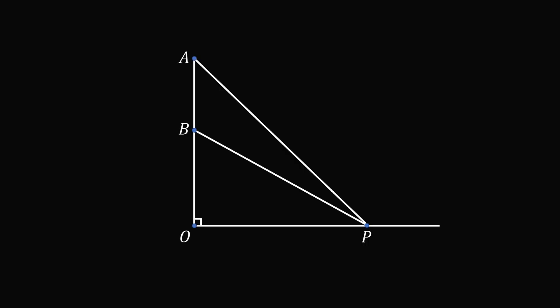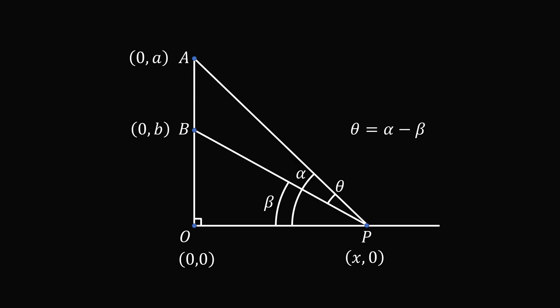So let's set up the problem. We'll start with the coordinate system. Suppose the point O is at the origin, B is at (0, b), A is at (0, a), and P is at (x, 0). Let's label the angle APB as theta, the angle APO as alpha, and we'll label the angle BPO as beta.